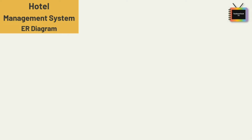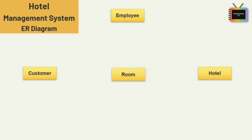Rooms, payments, hotel, customer, etc. Here I am taking only six entities: hotel, room, employee, customer, today price, and payment. Now let's see the relationship between all these entities. First, let's see the relationship between hotel and employee — employee works for hotel.